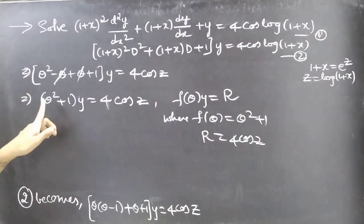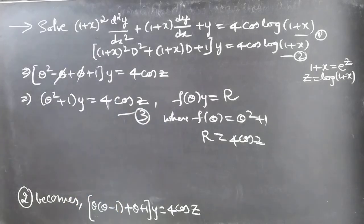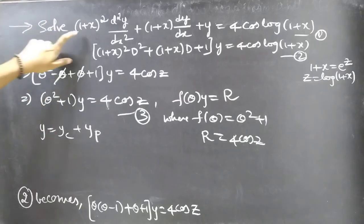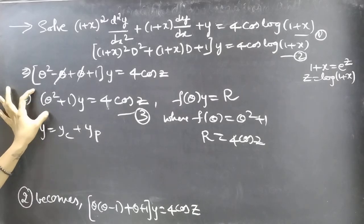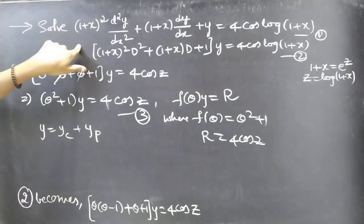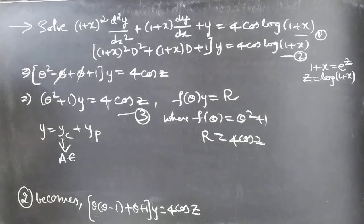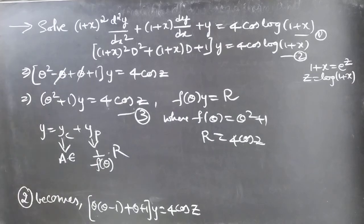We have reduced the given differential equation to a linear differential equation with constant coefficients. Consider this as equation 3. We will find the general solution using y = yc + yp, and then use that to find the general solution of the original equation in terms of x. Here yc is the complementary function and yp is the particular integral.